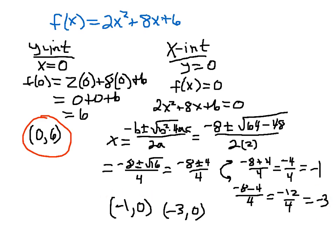So my coordinates here for my x-intercepts are minus 1, 0, minus 3, 0. In this video, I've shown you that you do not need to graph a quadratic function to determine the vertex and the intercepts.